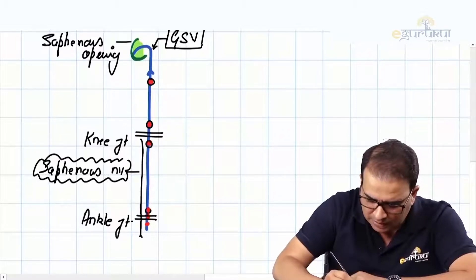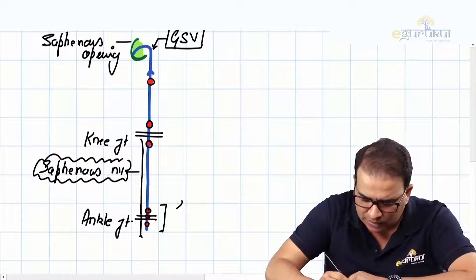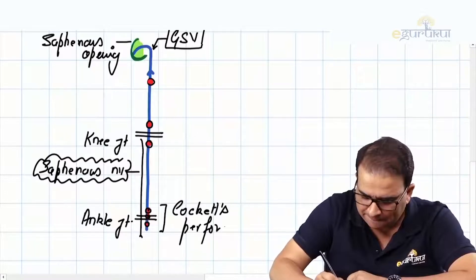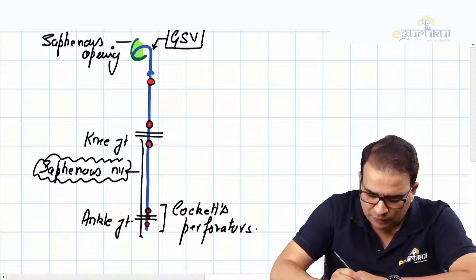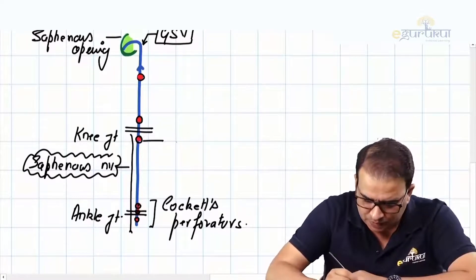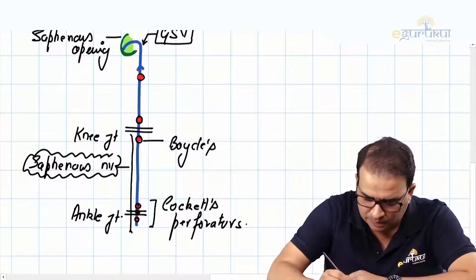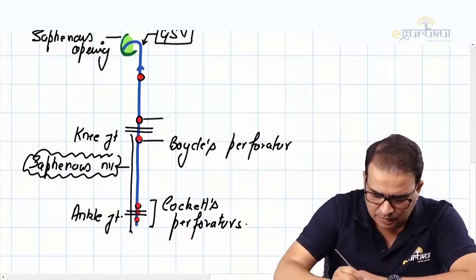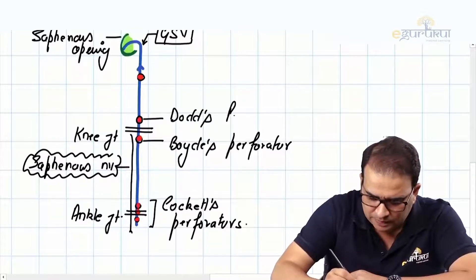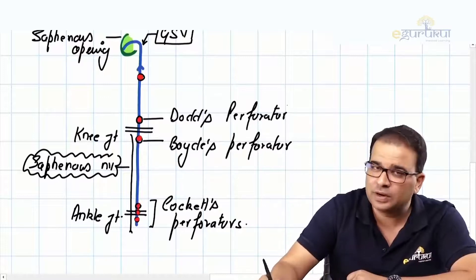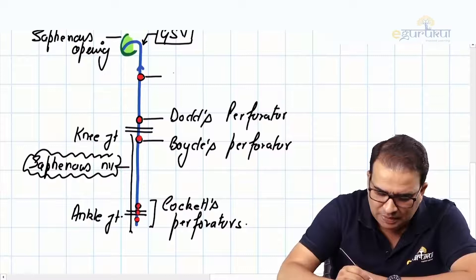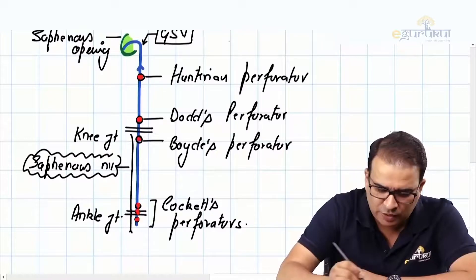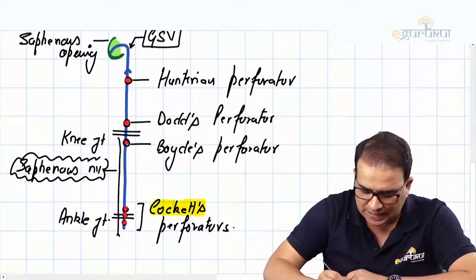There are particular names for these perforators. The perforators at the ankle - usually three in number - are called Cockett's perforators. The below-knee perforators are Boyd's perforators. Above-knee perforators are Dodd's perforators. And the perforator in the mid-thigh is called the mid-thigh or Hunterian perforator.